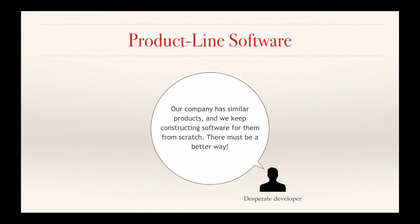The final category we're going to talk about is product line software. The motivation for product line engineering is that you're building similar systems — not necessarily software-only systems, but systems in which similar software is going to be used, like television sets or washing machines — and you want to streamline your development process. So how do you do that?